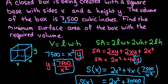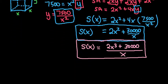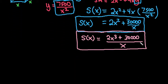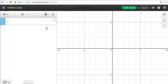Our goal is to find the minimum surface area, so we want to look at this in a graphing utility. You can use either Desmos or a graphing calculator. For this particular one I'm going to use Desmos, and I'll also do the same example with the TI-84 and the TI-Nspire. Just use the one you're most comfortable with.